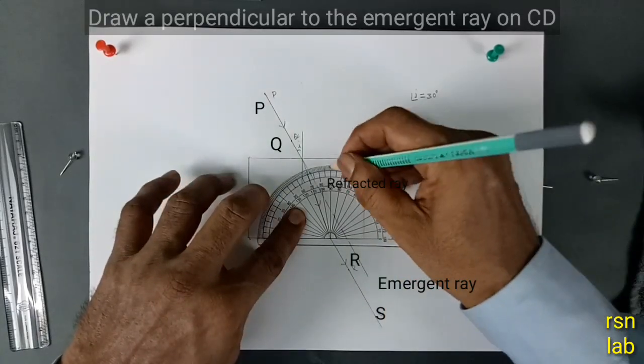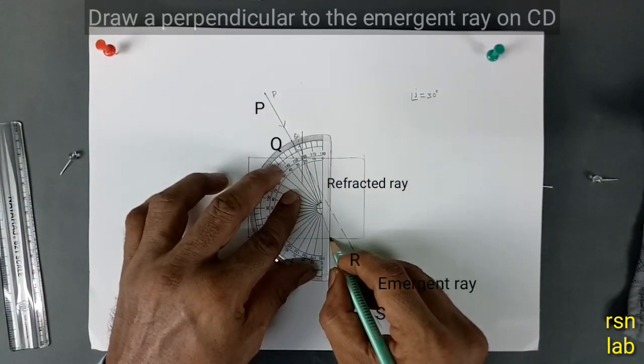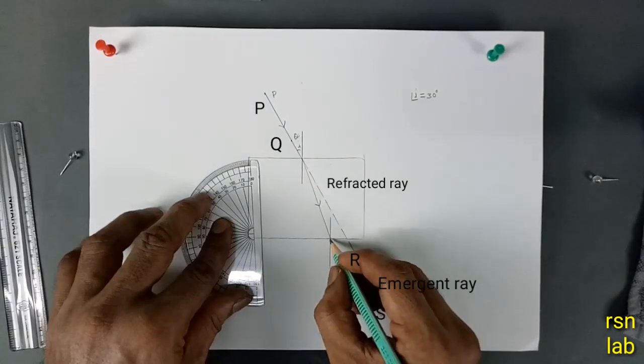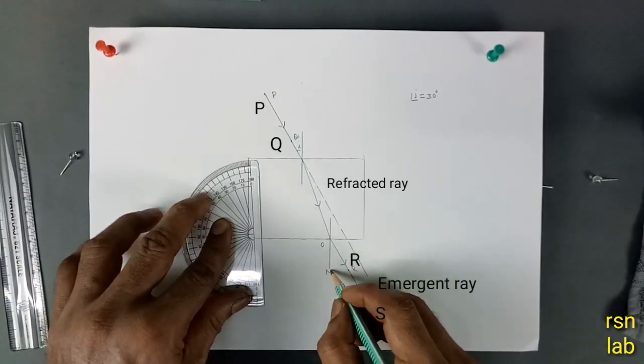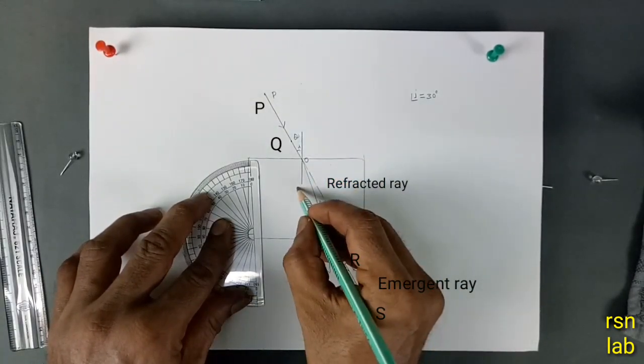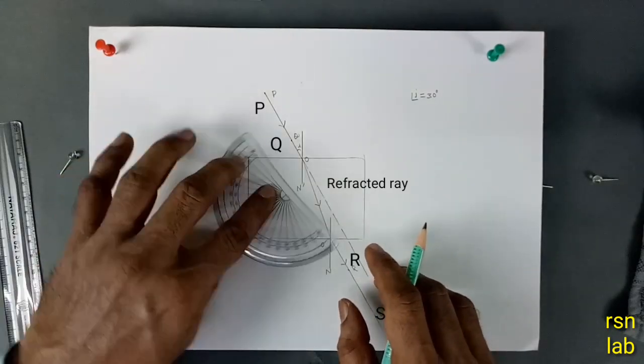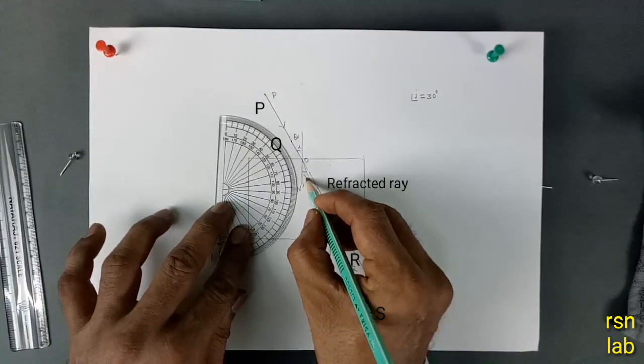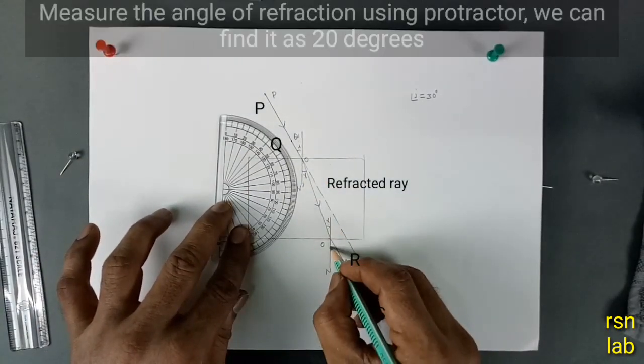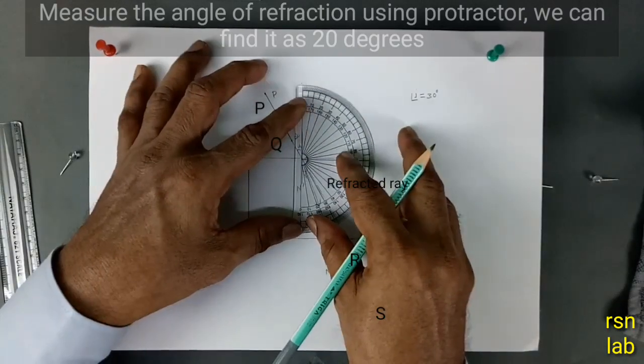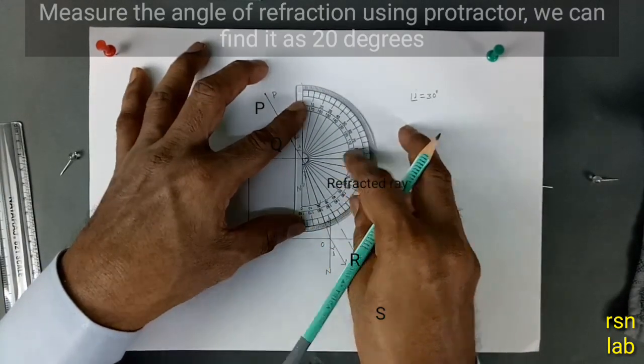Draw a perpendicular to the emergent ray on CD. Measure the angle of refraction using protractor. We can find it as 20 degrees.